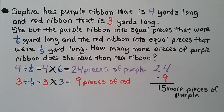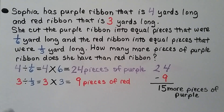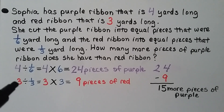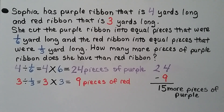Sophia has purple ribbon that is 4 yards long and red ribbon that is 3 yards long. She cut the purple ribbon into equal pieces of 1 sixth yard each, and the red ribbon into equal pieces of 1 third yard each. How many more pieces of purple ribbon does she have than red? For purple: 4 divided by 1 sixth — multiply 4 by the denominator 6 to get 24 pieces. For red: 3 divided by 1 third — multiply 3 by the denominator 3 to get 9 pieces. The difference is 24 minus 9, which is 15 more pieces of purple.